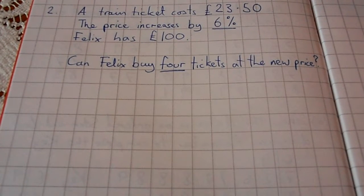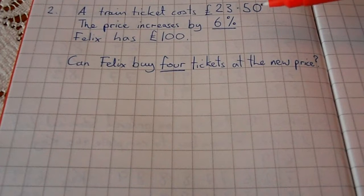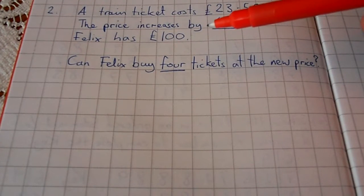In this question we need to do two things: work out the new price after it's increased by 6%, then calculate that new cost multiplied by 4 and see whether Felix can afford it with his £100.